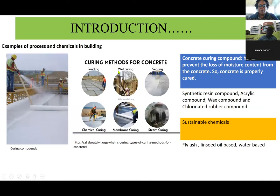When we are talking about the building process, there are different chemicals involved. For example, the curing process alone — not talking about the laying of the concrete, just the curing itself. If you talk about curing, there are different ways: you have ponding, wet curing, sealing, chemical curing, membrane curing, and steam curing. Just from that simple process, there are different aspects. If you look in detail at those different processes, you notice all sorts of different chemical processes taking place ingrained in the building process itself.